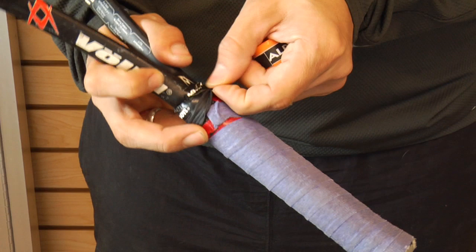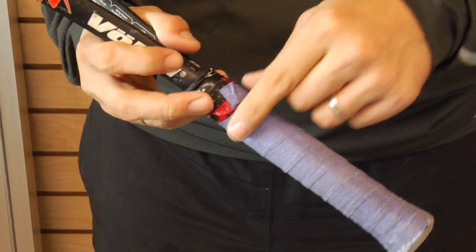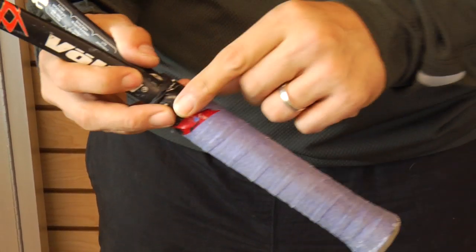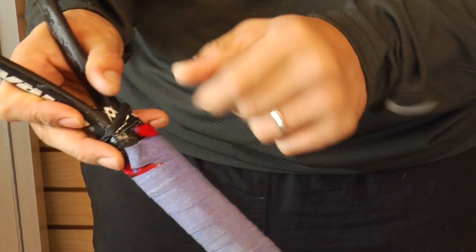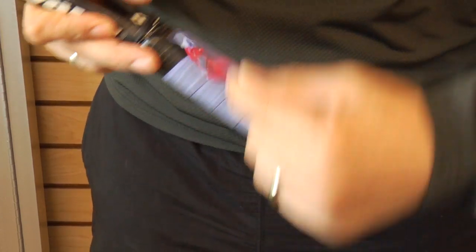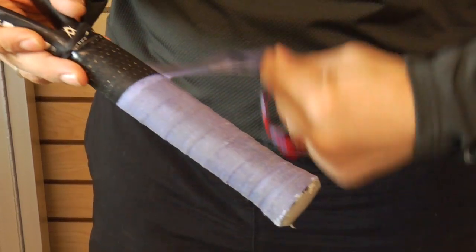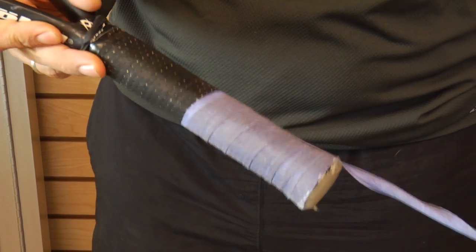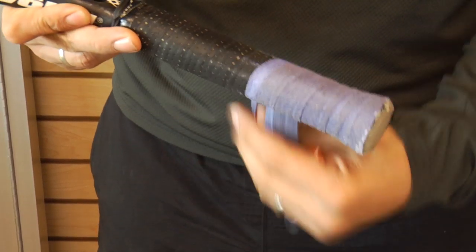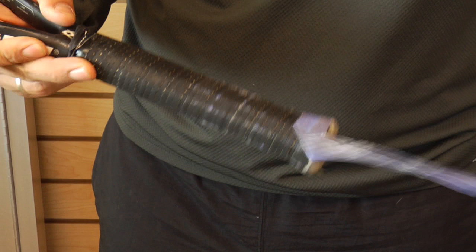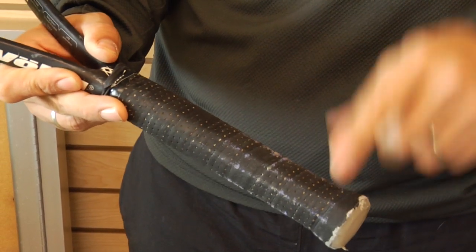This particular grip has an over grip already on it. First thing you want to do is remove that over grip by taking a little tape off the top. Simply take off the over grip. The original grip is still on underneath as you can see.